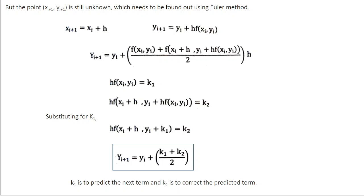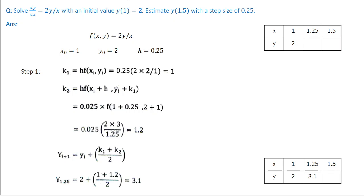Let's do a quick problem. Solve dy/dx = 2y/x with initial condition y(1) = 2, and find the value of y at x = 1.5 with a step size of 0.25. The x values are 1, 1.25, 1.5. The first set (x0, y0) is given, so you need to find y(1.25) and y(1.5). This is a step-by-step procedure. The slope f(x, y) = 2y/x, x0 = 1, y0 = 2, h = 0.25.